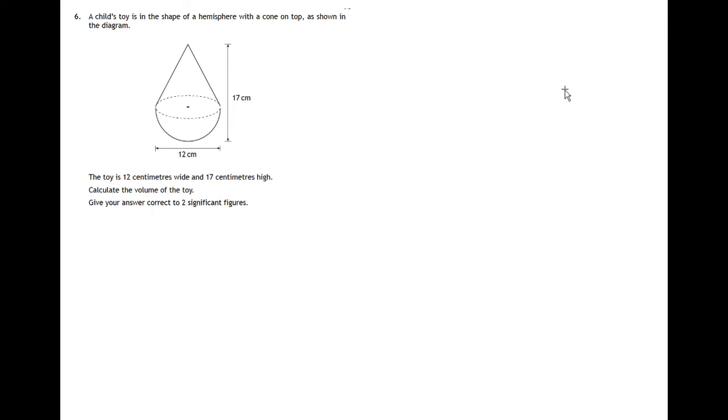This is question 6, paper 2, from the SQA specimen paper for National 5 Mathematics. There's a diagram of a toy which consists of two parts, a cone and a hemisphere, half of a sphere.